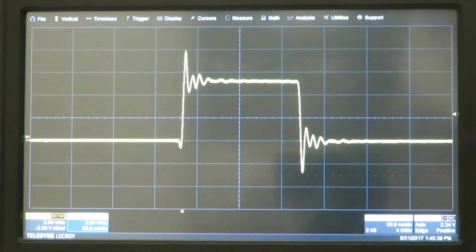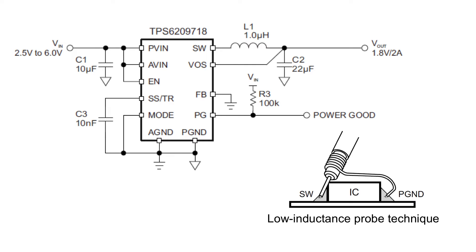In order to better understand the improved measurement setup I will show you some slides. Here you see the circuit of the 62097. The first thing we do to improve the measurement setup is to connect the scope probe directly from the switch pin to the power ground pin.